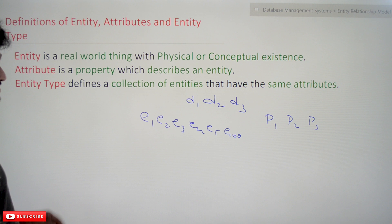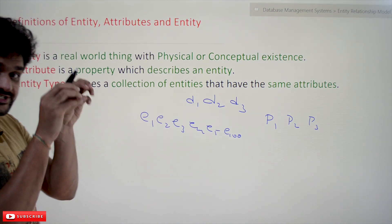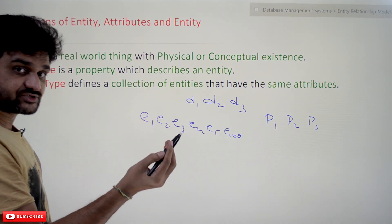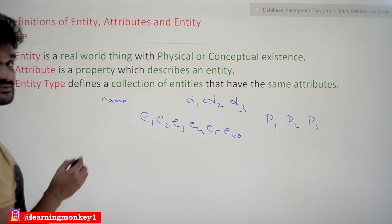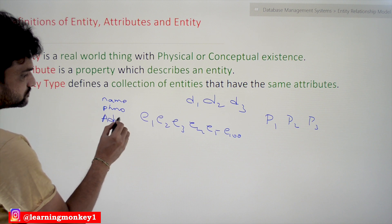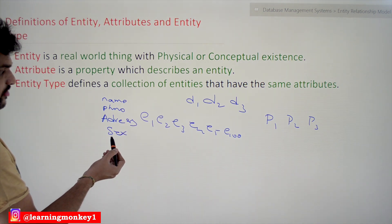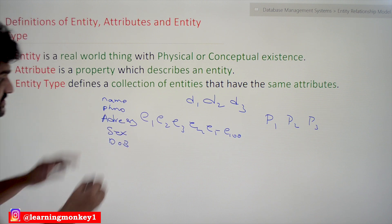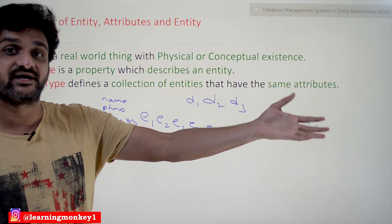What is meant by an attribute? An attribute is a property which describes an entity. For example, if you take an employee, some properties which describe an employee are: name, phone number, address, sex, and date of birth. These are all properties which describe an employee, whether they are a CEO, manager, or clerk — all employees will have these properties.